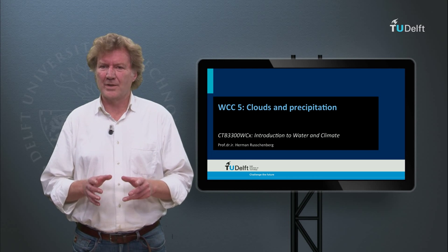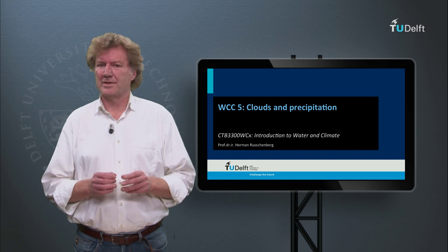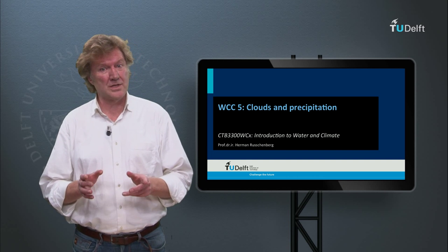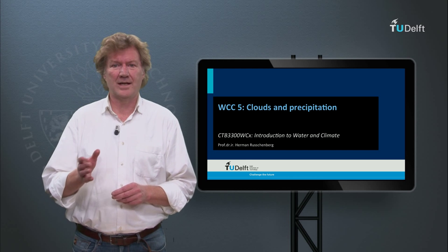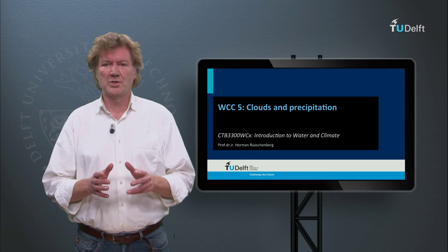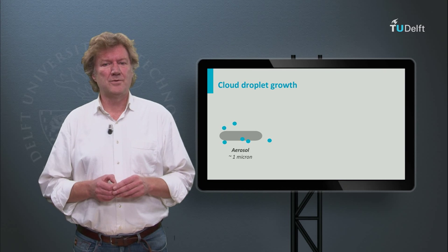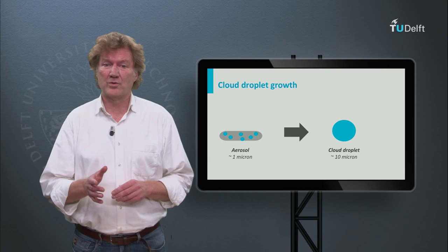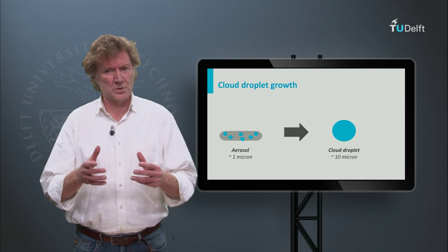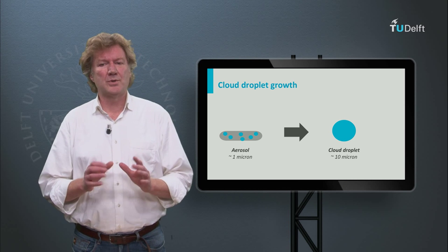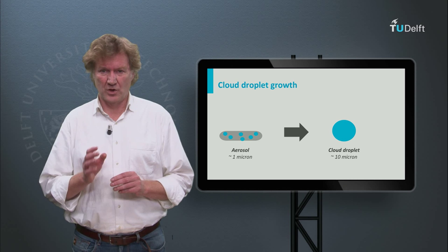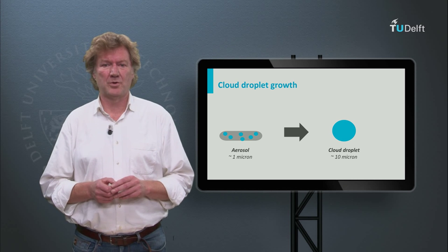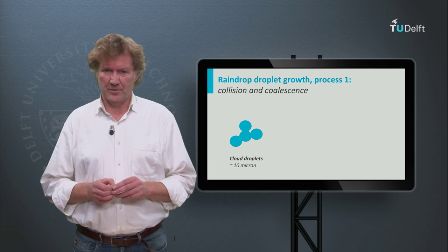An important element in the clouds and climate puzzle is the cloud lifetime — how long does the cloud stay in the atmosphere? Clouds can disappear after evaporation and after rain. In this module we will talk about rain. Rain falls in large droplets of a few millimeters. We have seen that a cloud droplet forms around an aerosol that attracts water molecules, but that process only results in droplets of approximately 10 micrometers, much smaller than typical raindrops.